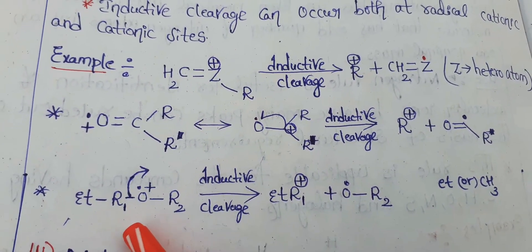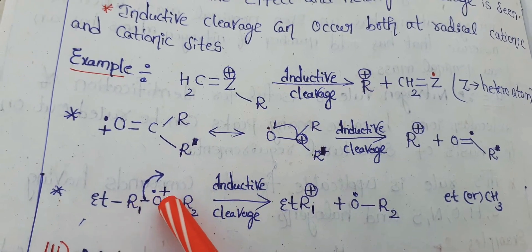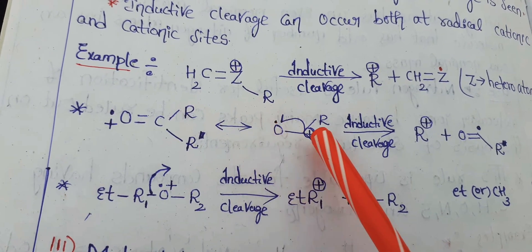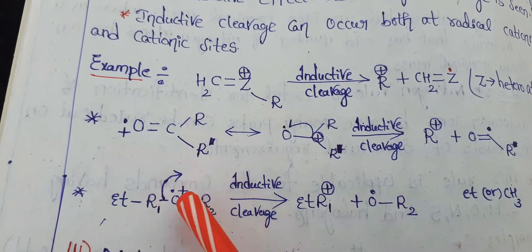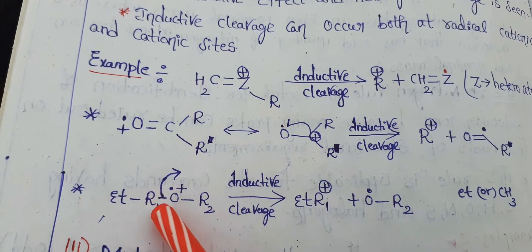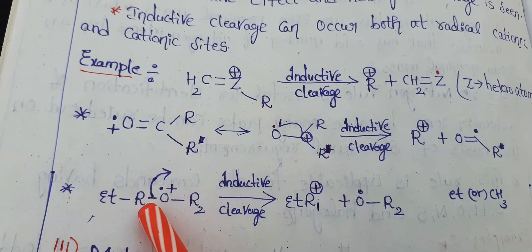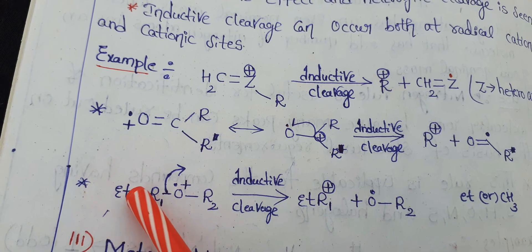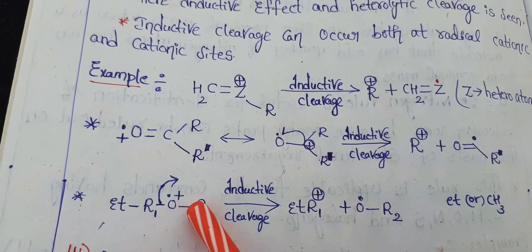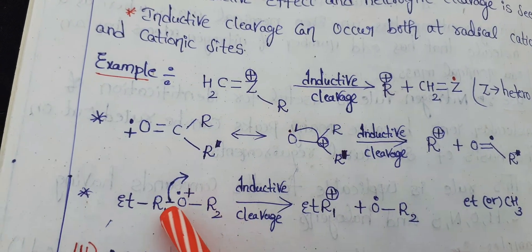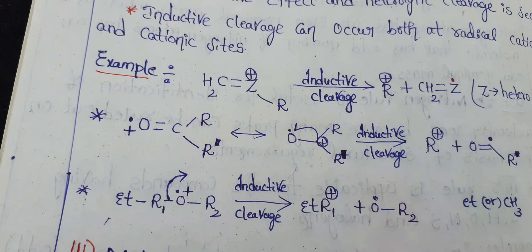Let us observe the second example. Here also a similar thing occurs, but the difference is that in the first case only a single radical was donating, so we used a half arrow. Here the complete electron pair — meaning the entire bond — is going to break. The bond present between R and oxygen is going to break, so that here the R gets a positive charge. Here we may use ethyl or methyl for R. And as this positive charge leaves because the bond is breaking, only a single radical remains on the oxygen side.